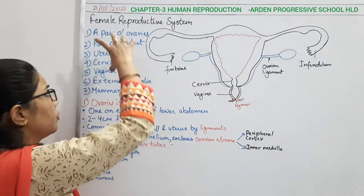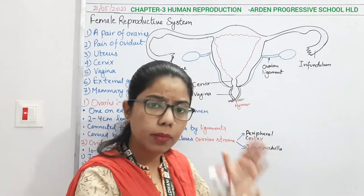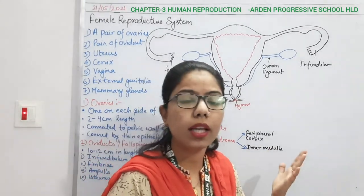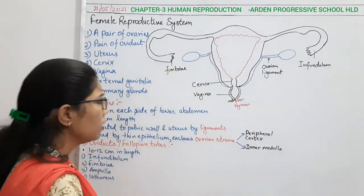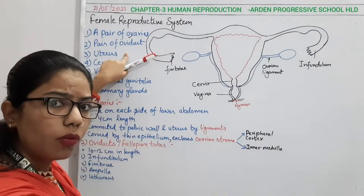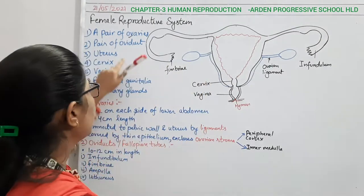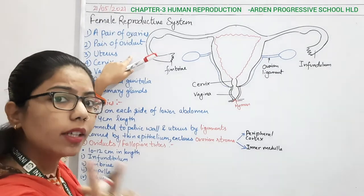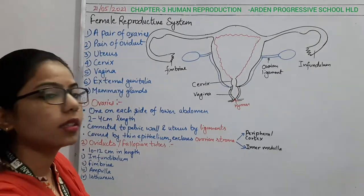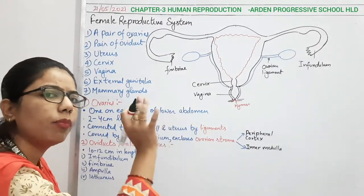Today we are going to start with the different parts of the female reproductive system. A system means there are components coordinating with each other, and then only there will be formation of the female gamete. The parts are: a pair of ovaries — meaning two ovaries — then a pair of oviducts, also known as fallopian tubes. So if you have two ovaries, you have two fallopian tubes.